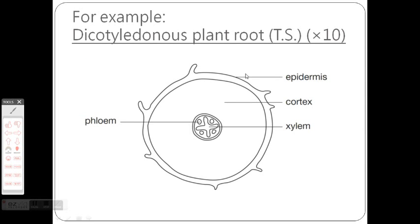One example is this. This is a low power transverse section of a plant root. You can see the xylem, phloem, and then you draw whatever you can see and label it. The labeling lines are horizontal. This is a good example. Even better if you can use dots to shade it and indicate the color.